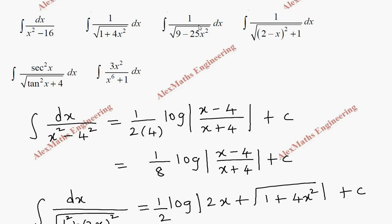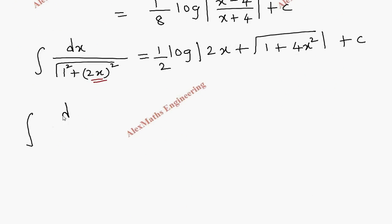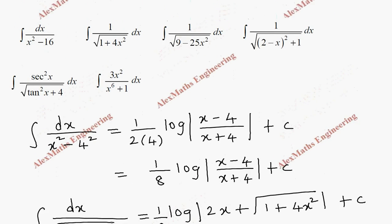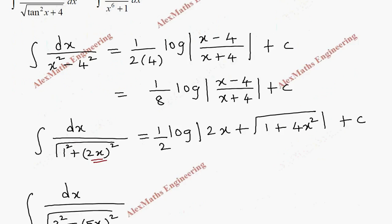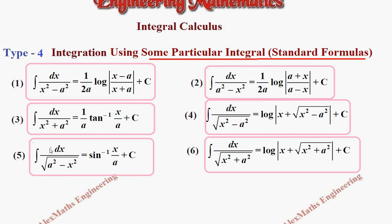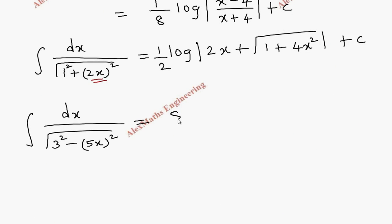Question 3: ∫dx/√(9−25x²). This can be rewritten as √(3²−(5x)²), so we have a = 3 and x replaced by 5x. This is of the form ∫dx/√(a²−x²), which is Formula 5: sin⁻¹(x/a) + C. So the answer is sin⁻¹(5x/3), but since the coefficient of x is 5, we divide the outside by 5, giving (1/5) sin⁻¹(5x/3) + C.